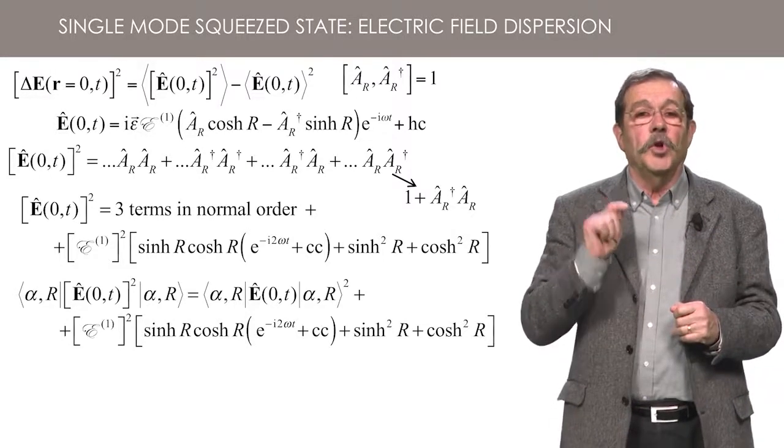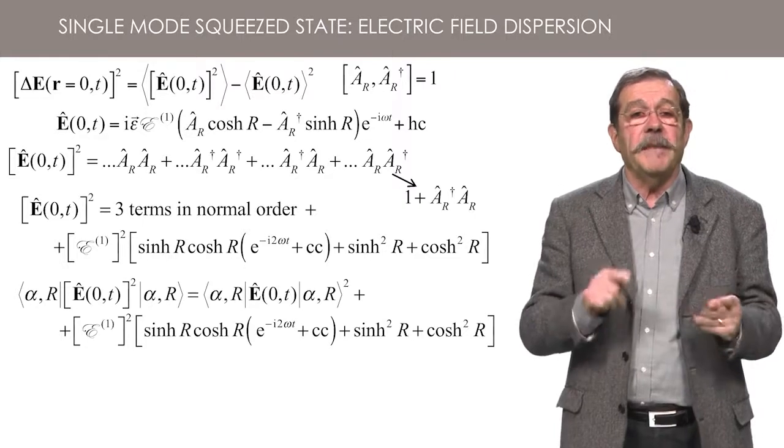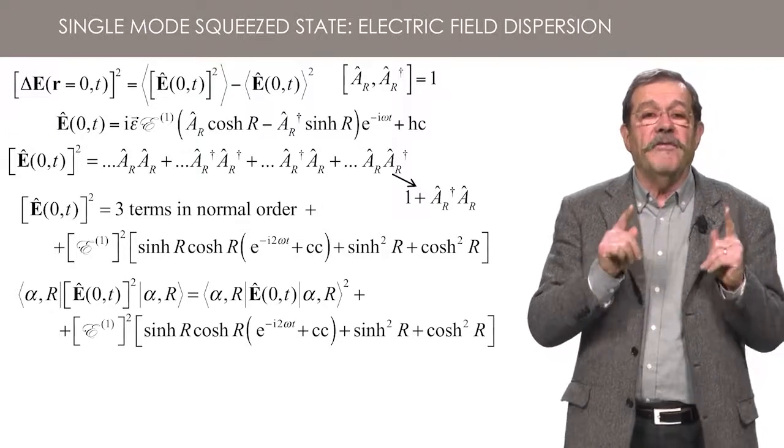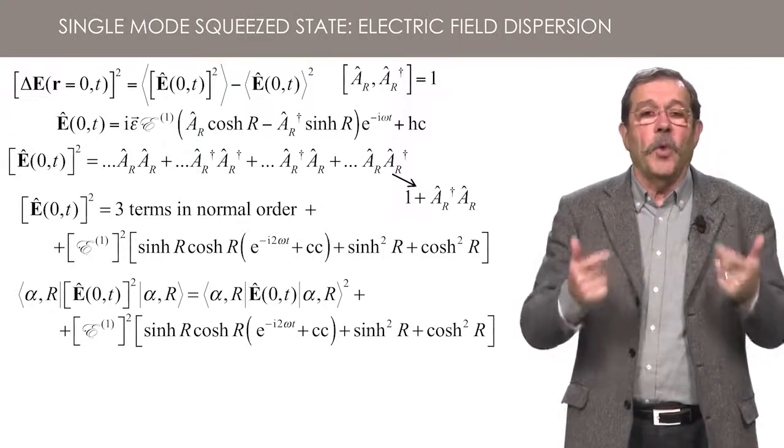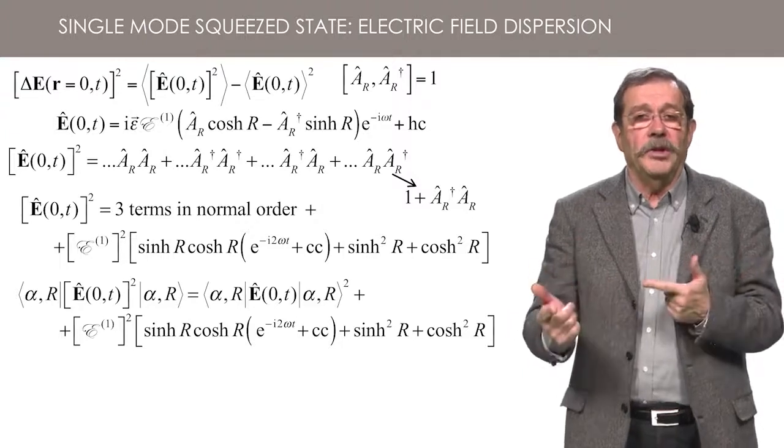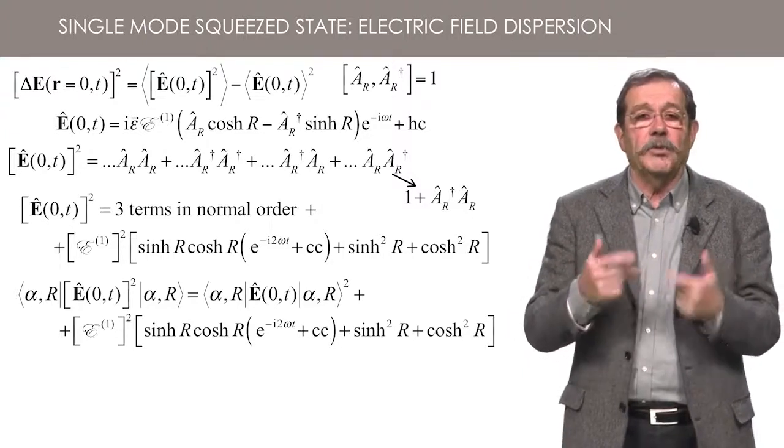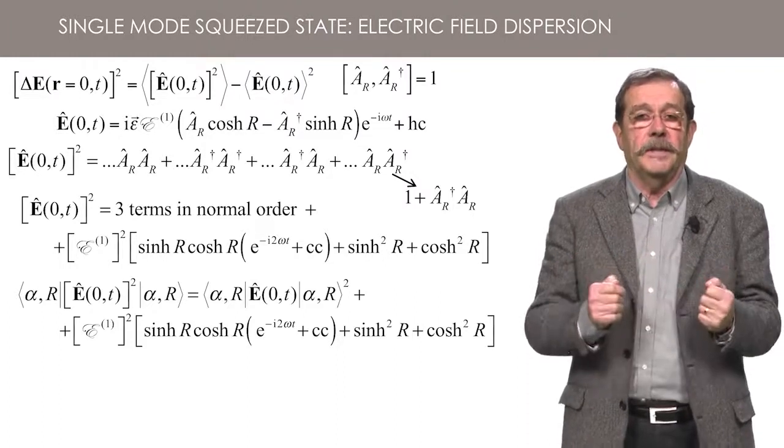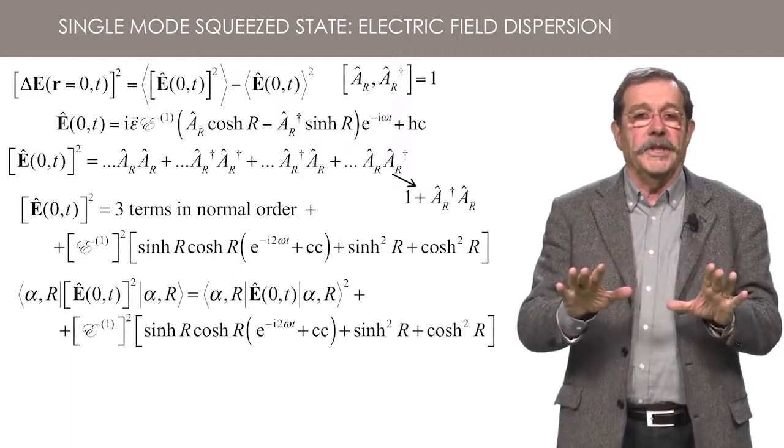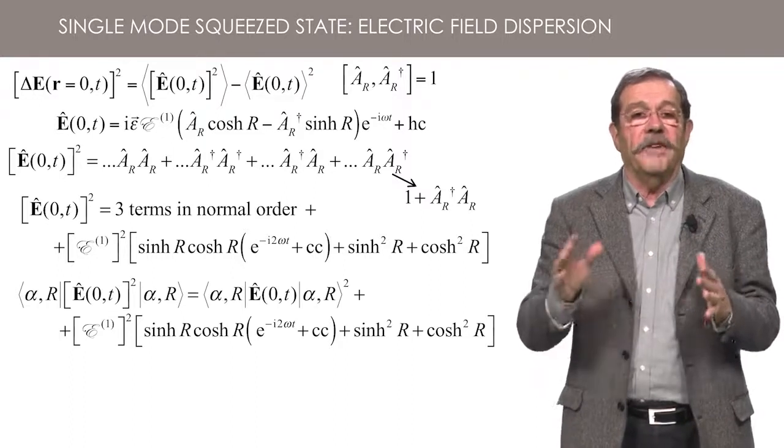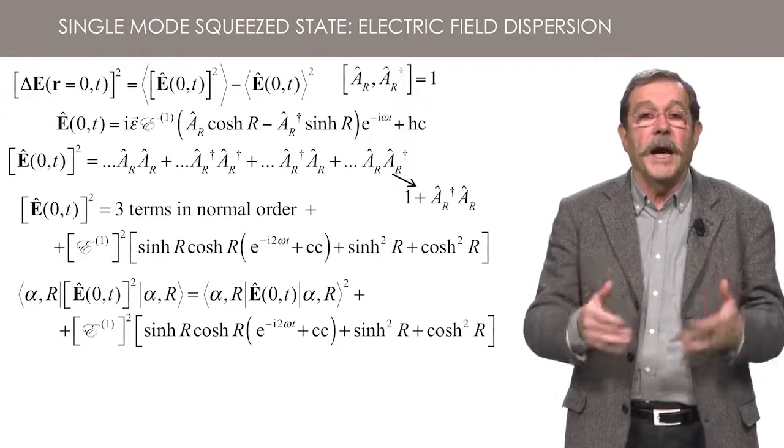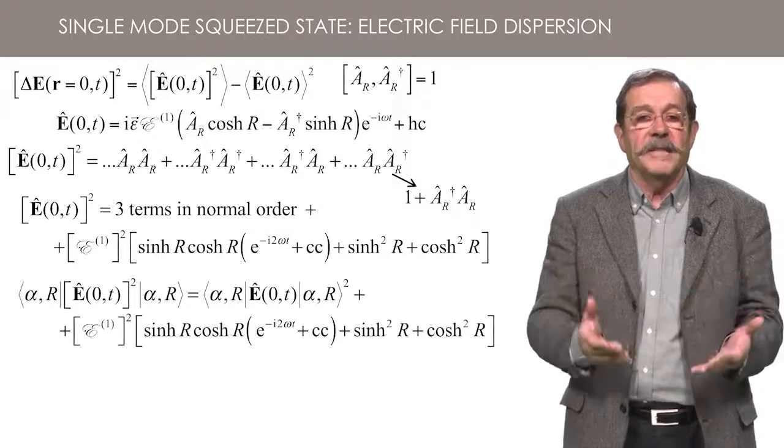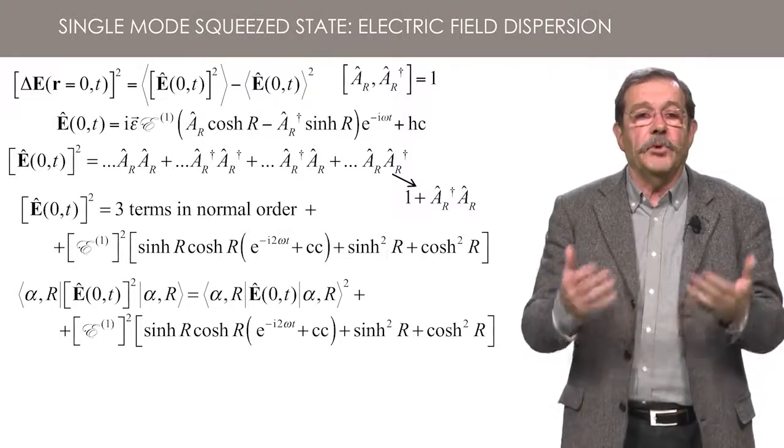At this point, you should have recognized the same trick that you learned about quasi-classical states. To calculate the variance of an observable, you write the squared observable in the normal order and only keep the average of the supplementary terms coming from the commutation relation to obtain the variance. Since the commutation relations, as well as the action of AR and A dagger R on squeezed states are similar to the ones of A dagger and A for a quasi-classical state, the same trick applies.